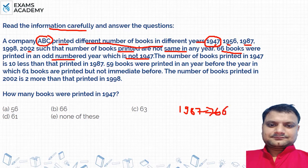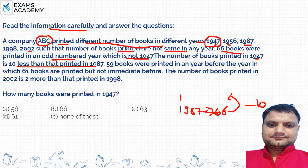The next clue says that the number of books printed in 1947 is 10 less than that printed in 1987. 1987 has 66 books, so 10 less than that is 56. So the number of books printed in 1947 is 56.